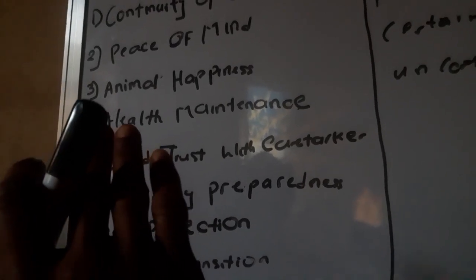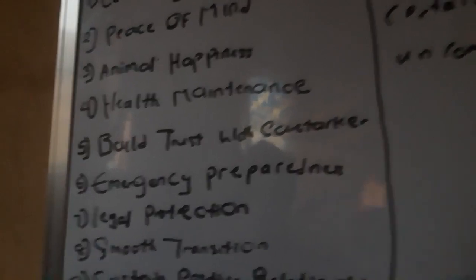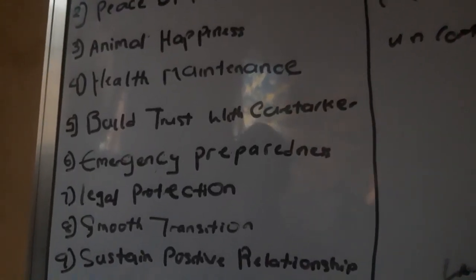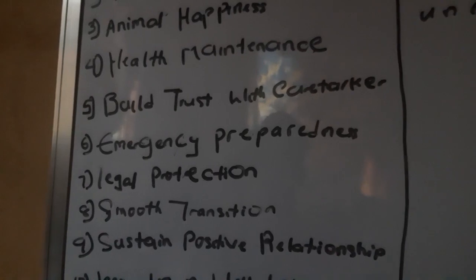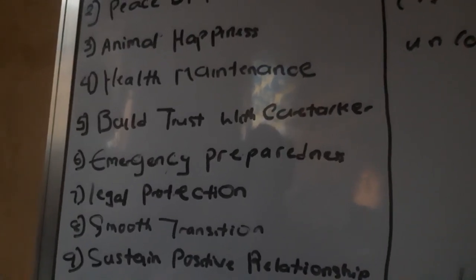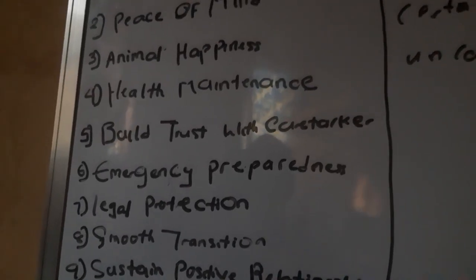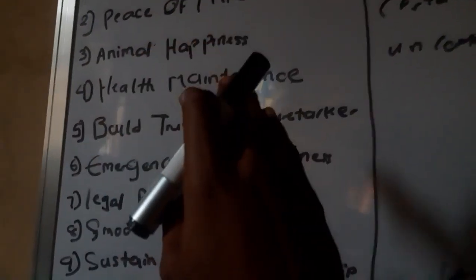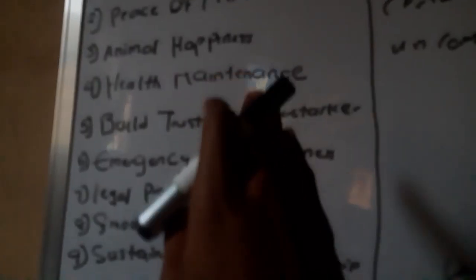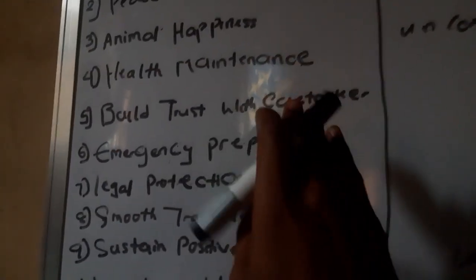Number four is health maintenance. You cannot do it alone — you still need health support. So once you have a caretaker who is a veterinary doctor, you will have health maintenance, which means there will be long-lasting animals and low mortality in your farm, because you have a caretaker that will take care of it for you.